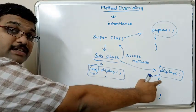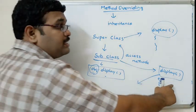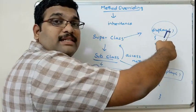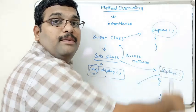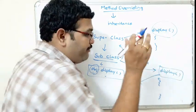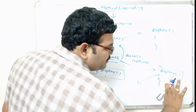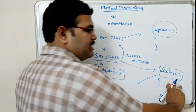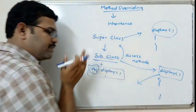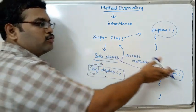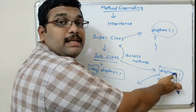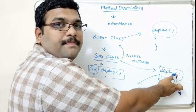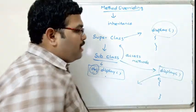In the absence of a display function in the subclass, the superclass display function will be executed. But if you write the same display function in both the superclass and subclass, the first preference goes to the subclass method.